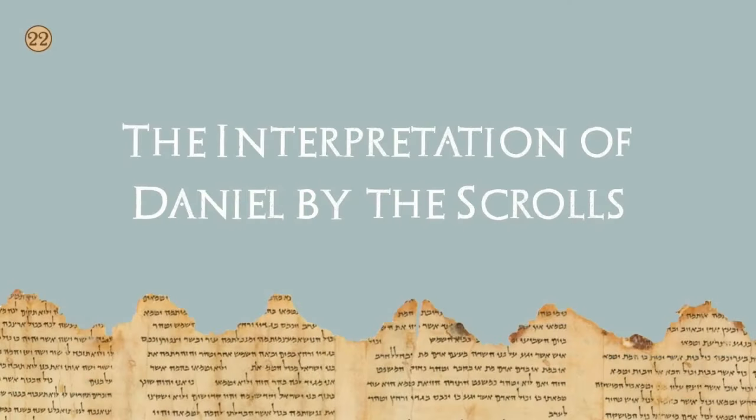So just a reminder: as we go along in this seminar, the number on the top left-hand side corresponds to the page number in the book. We're going to begin talking about the interpretation of Daniel by the scrolls. We've talked about the biblical manuscripts of the book of Daniel found among the scrolls, but there were also a number of other scrolls — sectarian works written by the Essenes — interpreting the book of Daniel and other passages, giving their view of the end times. We're going to look at how they viewed and understood the book of Daniel and what that tells us about how the book of Daniel was viewed during the time of Jesus.